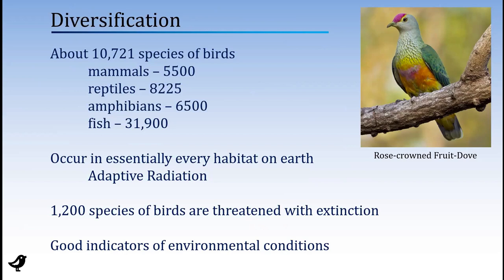About 1,200 species are roughly threatened with extinction — that's something like 10%. One reason I always talk about conservation is we have a lot of really serious conservation issues with bird population declines. And there are a few things that everybody can do right on their own home property, so it's good to know about those.